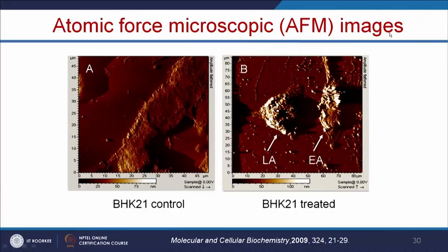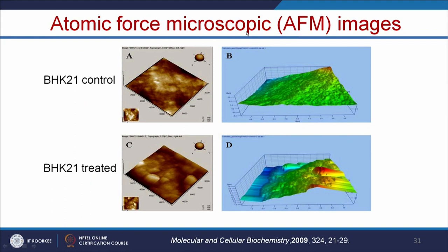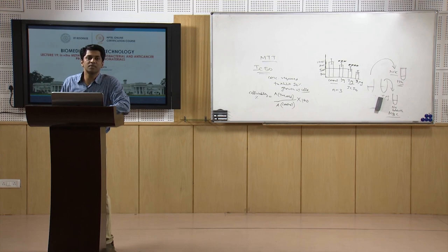We can also use atomic force microscope to understand cellular morphology. In the control, you can see the long fibroblast-like cells with intact nucleus — the cell morphology is perfect. In the treated one, cells are undergoing early-stage apoptosis — membrane blebbing has started forming. Late apoptotic cells become rounded. We can also use atomic force microscope to study the surface roughness of control versus treated cells. In the control cells, there is a smooth surface, whereas in treated cells, the roughness is changed — by measuring roughness we can understand the status of the cell membrane.